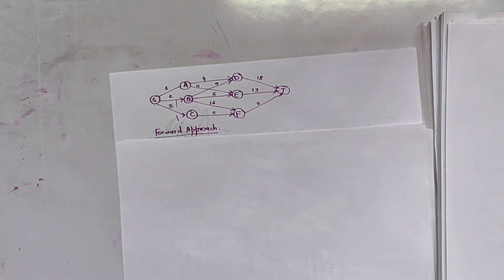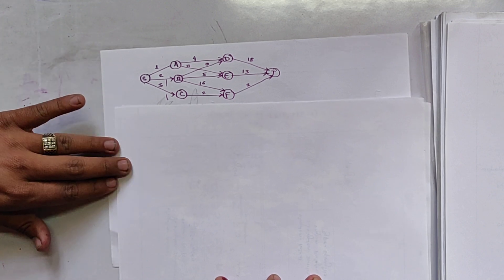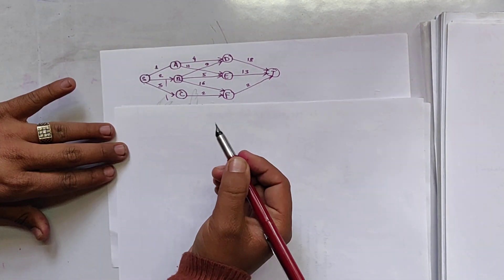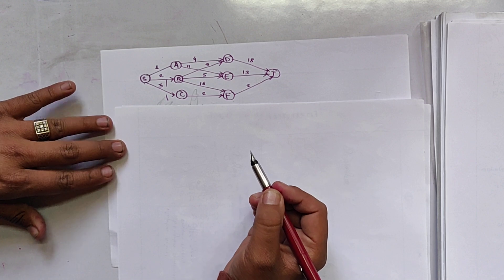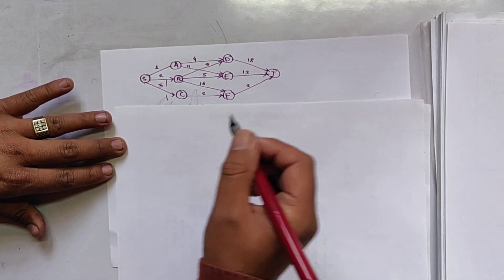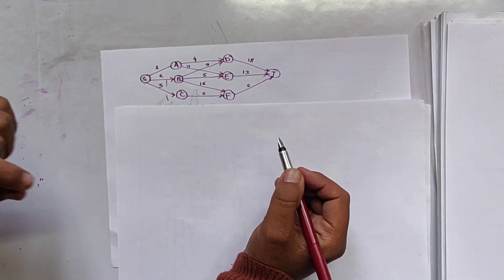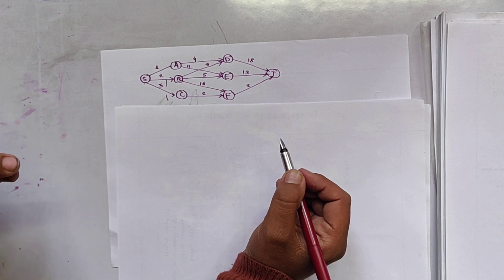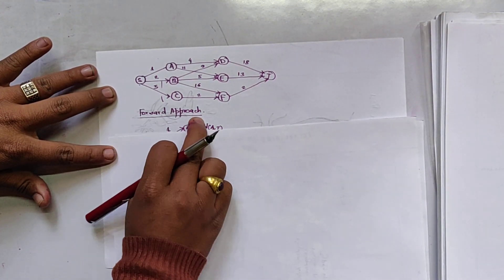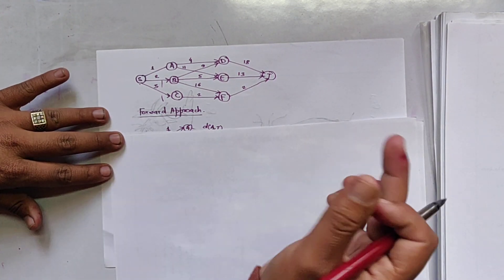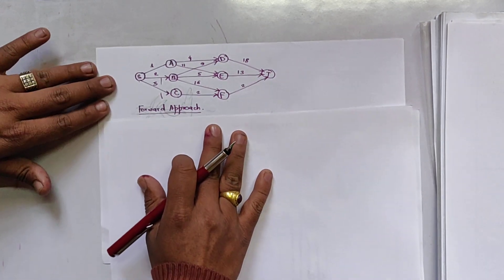In the backward approach we substitute values starting from the initial case — we calculate values from the initial process, which is why it is also known as forward reasoning. In the forward approach, we find the final value first and substitute backward, which is why that is called backward reasoning.